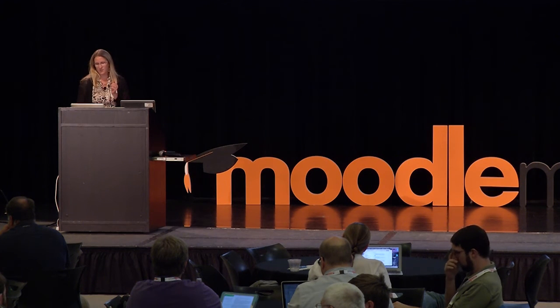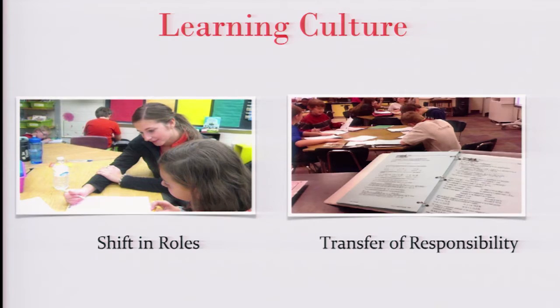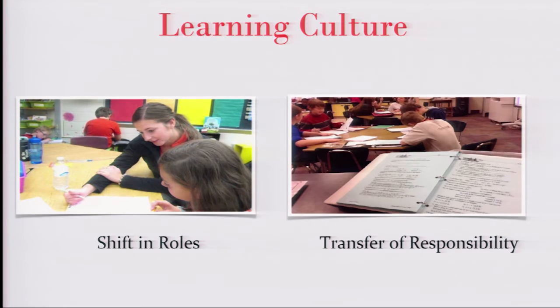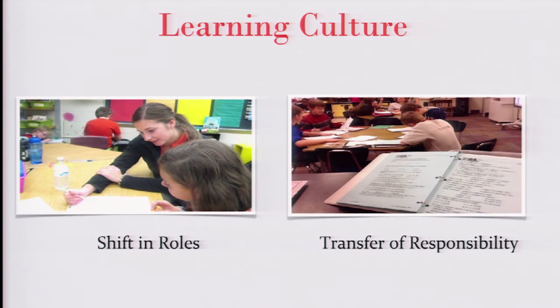Learning culture is probably the hardest pillar. It means shifting the role of the teacher and the student. In a traditional classroom, the teacher disseminates information but struggles to differentiate for different types of learners. In a flipped classroom, the student starts to take more responsibility for their own learning because the teacher builds that type of environment. A flipped classroom in high school is more challenging than in elementary — high school teachers get more pushback. Students who've learned to 'play the game of school' suddenly find the rules changed on them.